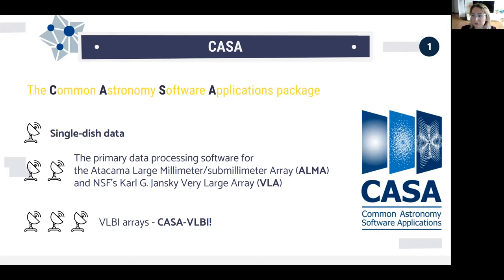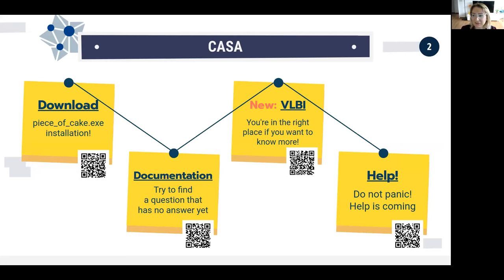The main point of my presentation is to provide you with all the web sources you can use to find everything about CASA. I think you shouldn't need to know every answer — you just need to know where to find it. There are useful links in this presentation and a copy on the wiki page, so you can click on all these links right now and check documentation or download CASA if you don't have it yet. There are also QR codes so you can scan them with your phone.